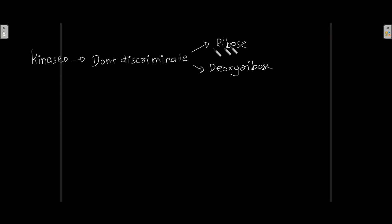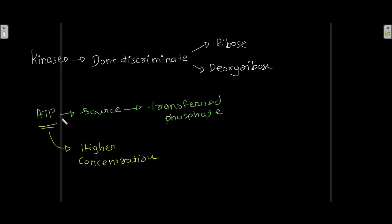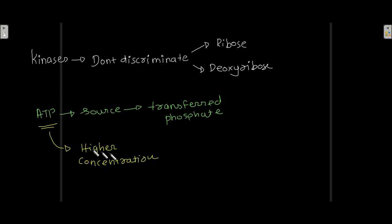These kinase enzymes can act on ribose as well as deoxyribose. ATP is generally the source of the transferred phosphate because ATP is present in higher concentration as compared to other nucleoside triphosphates. Among all the other nucleoside triphosphates, ATP is present in the highest concentration, and that is the reason why ATP is the source of the transferred phosphate.